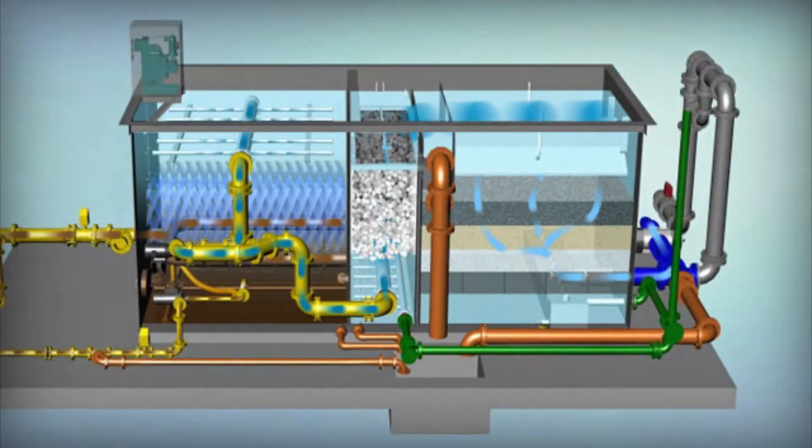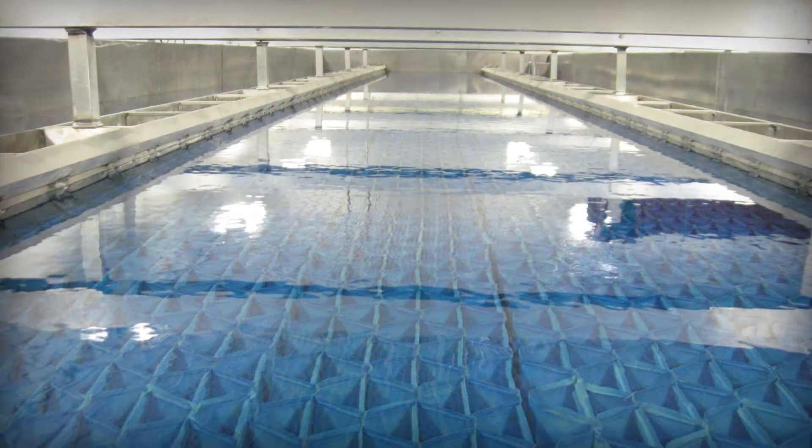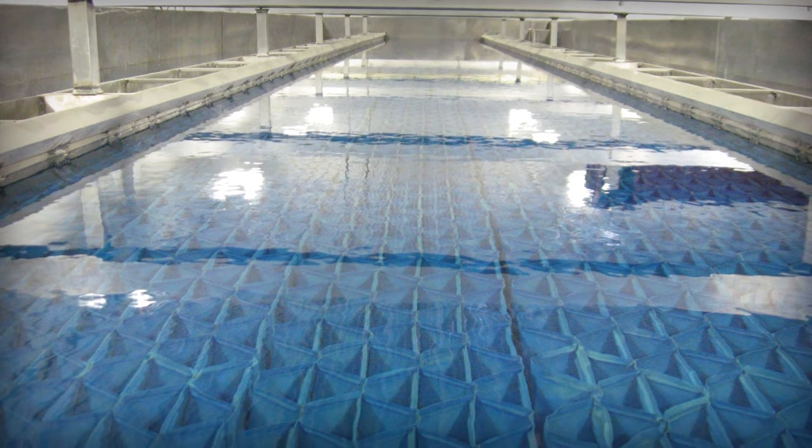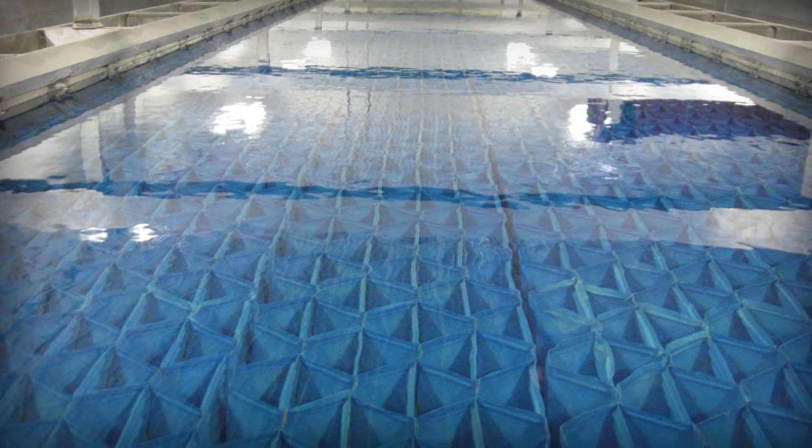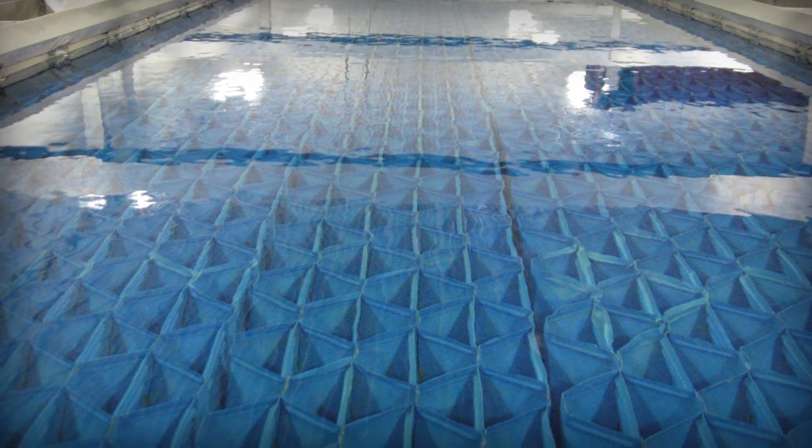The first stage in the Trident HS system is the high-rate tube clarifier. In this section, the majority of the settled solids are retained to reduce the load on the following stages, improving performance and reducing waste volumes.